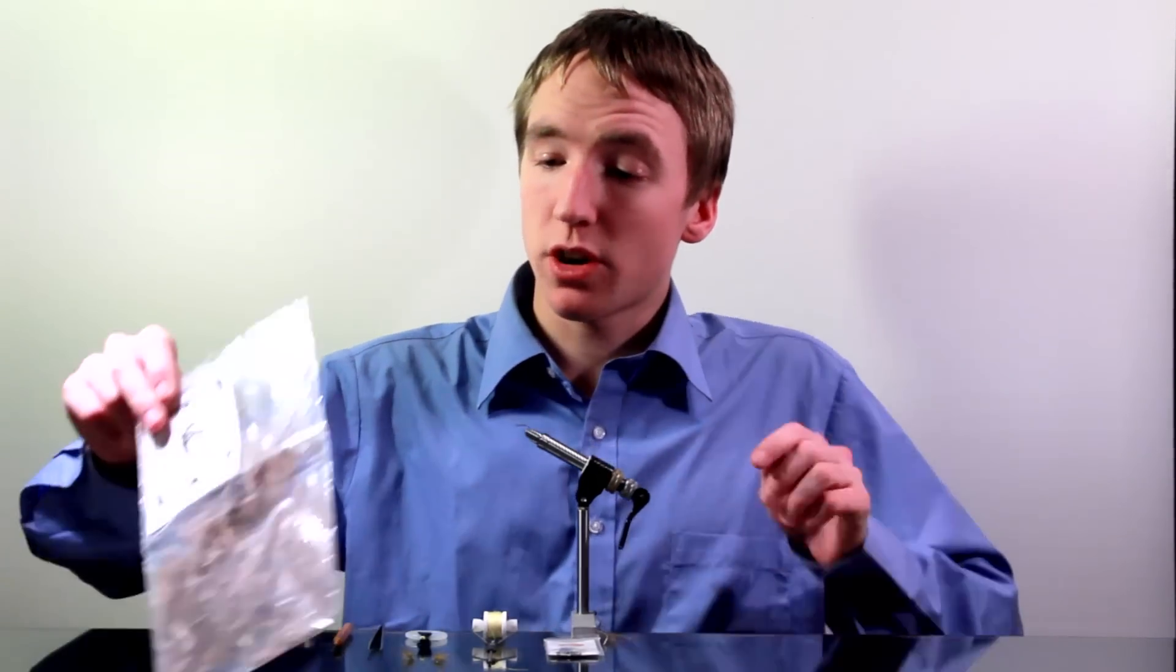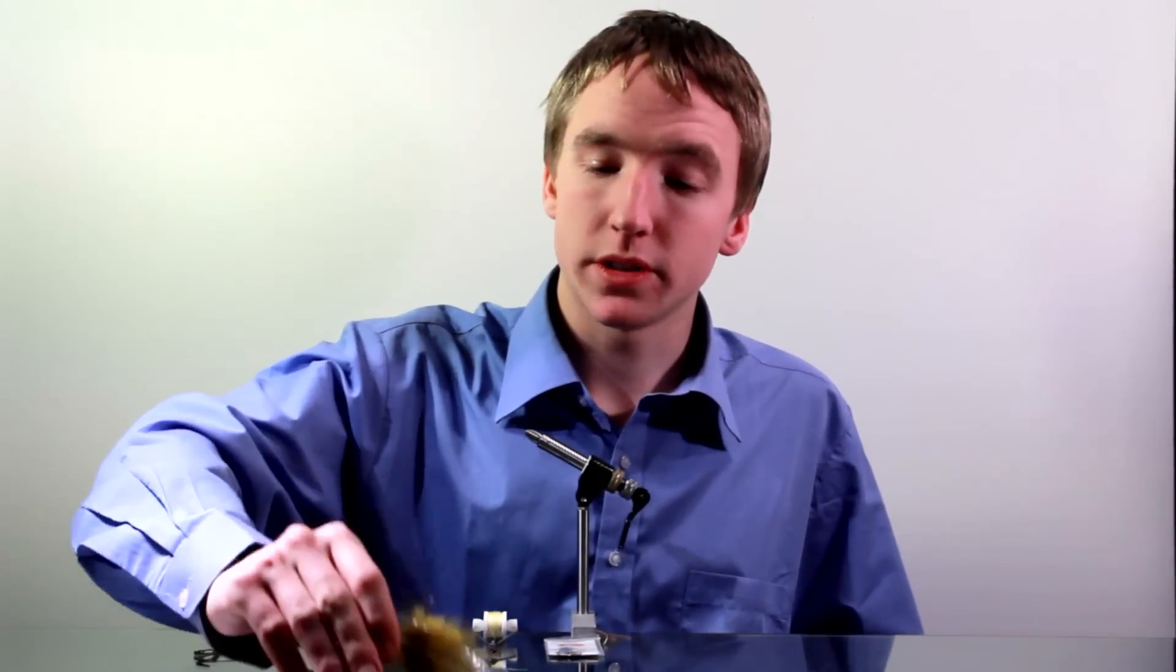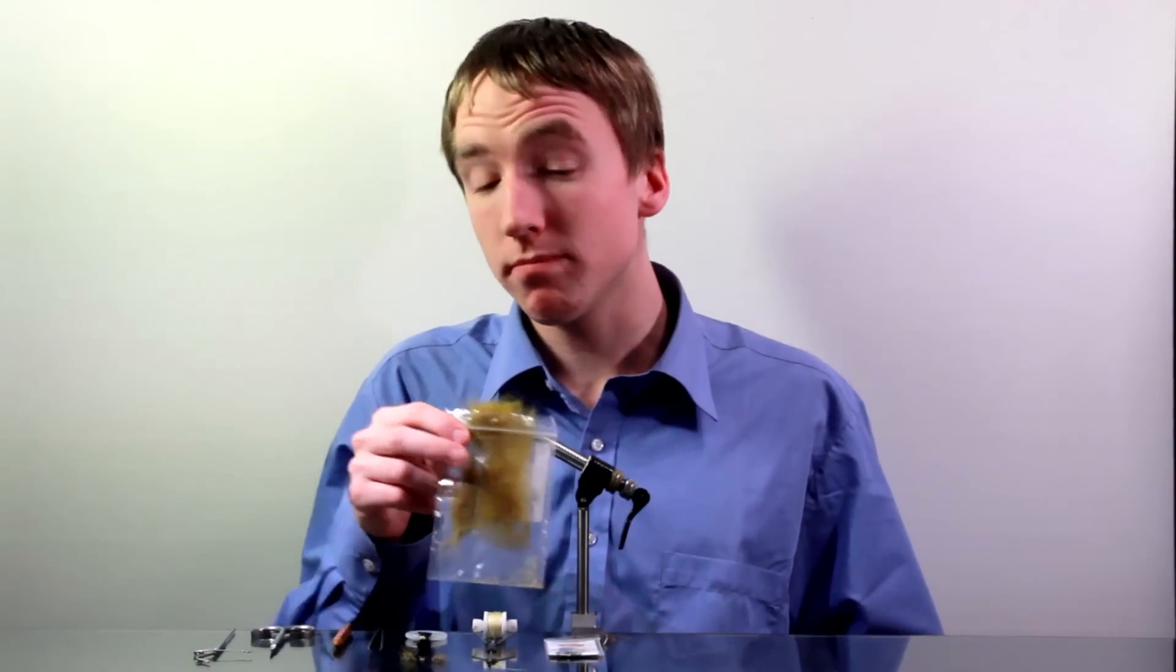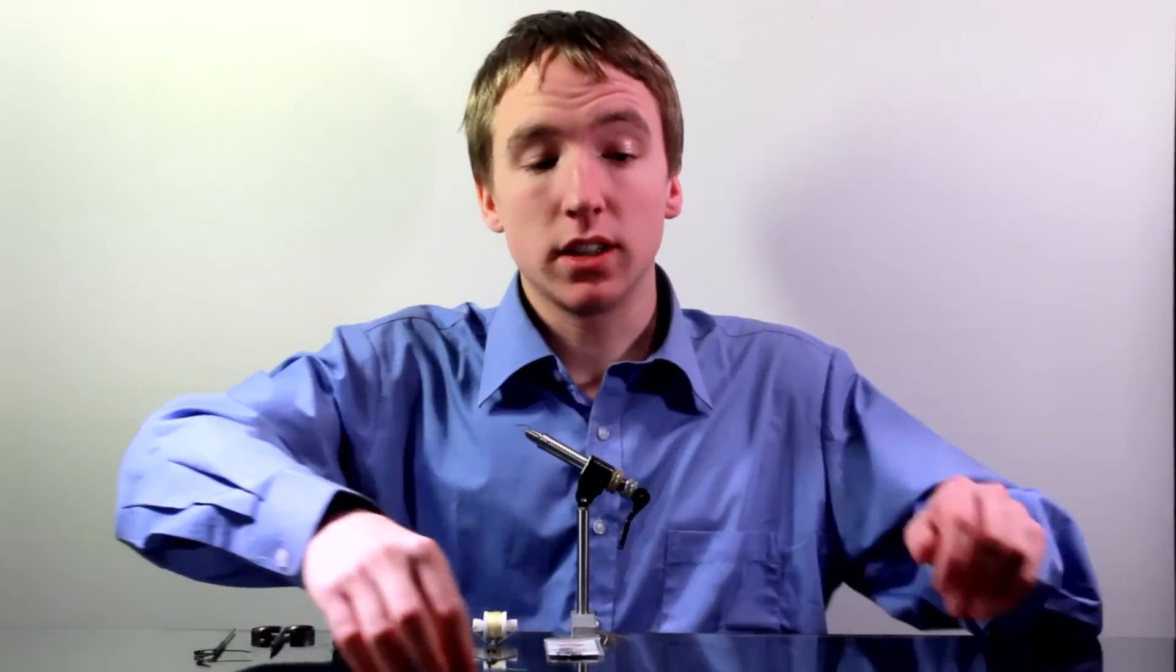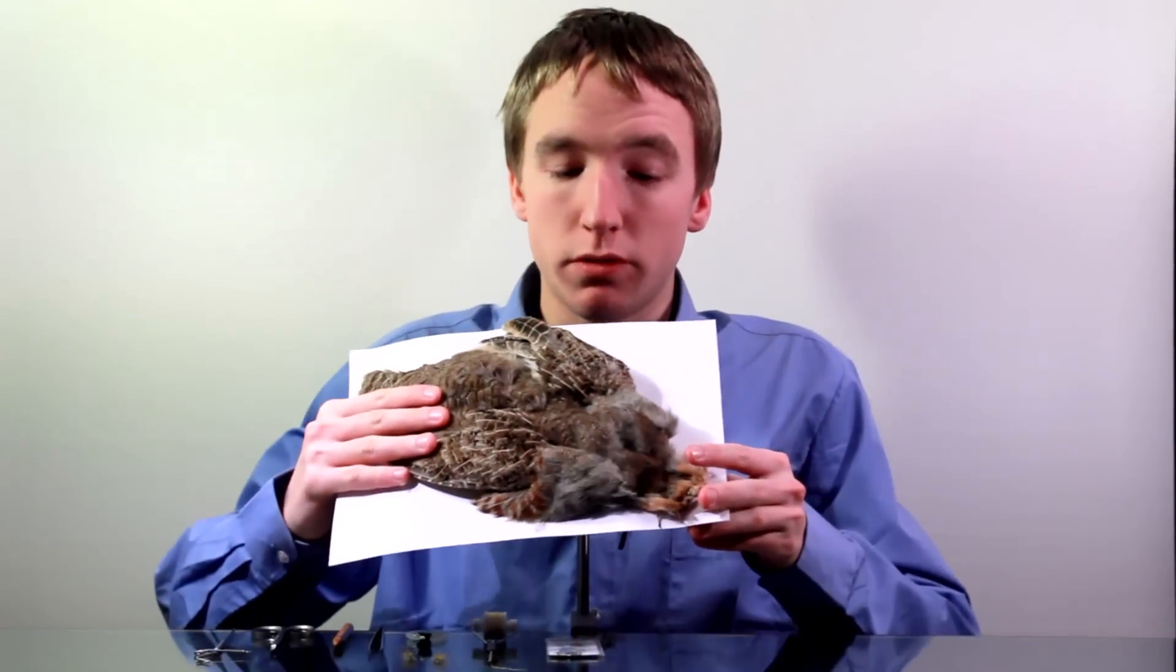It's a rather simple design. The tail is made from a few fibers of the CDC. The body is made from seals fur dubbing in the color golden olive and the hackle is made from a few good turns of partridge.